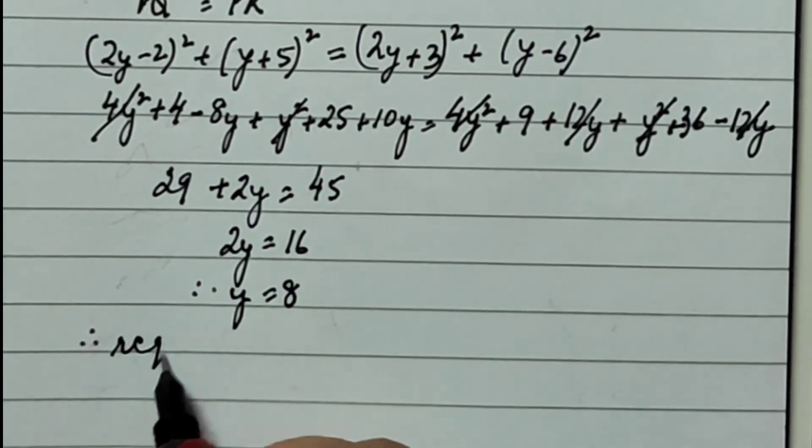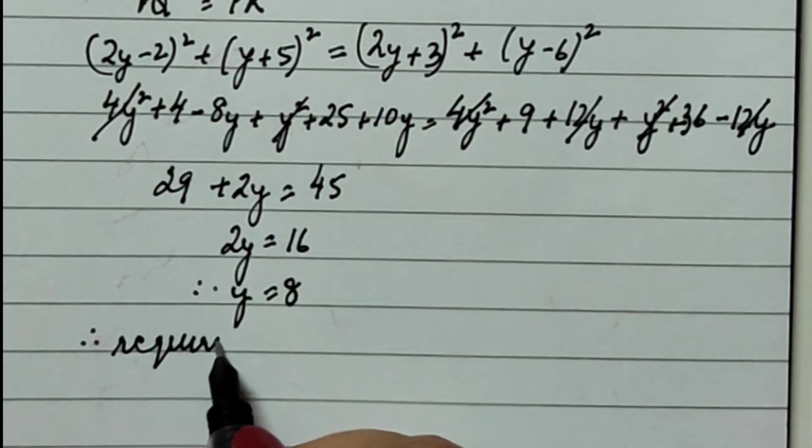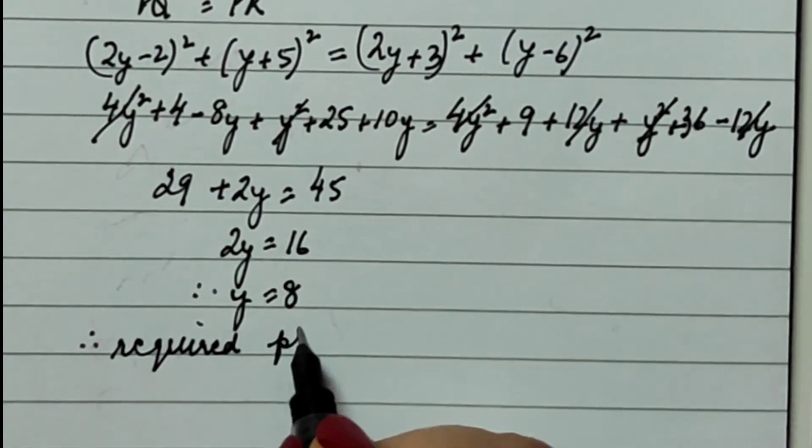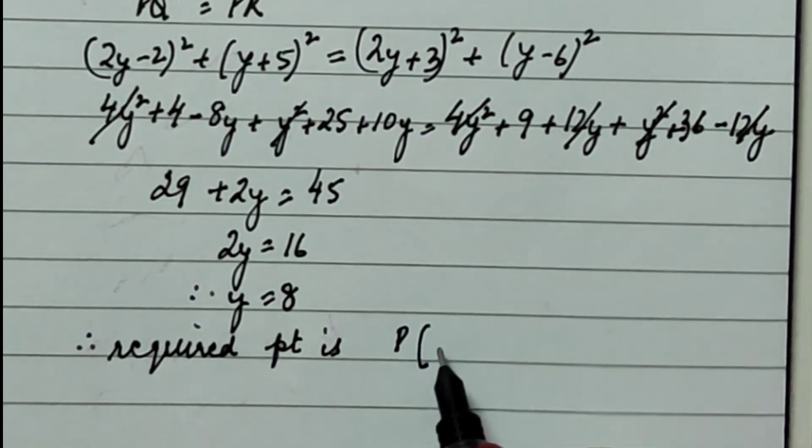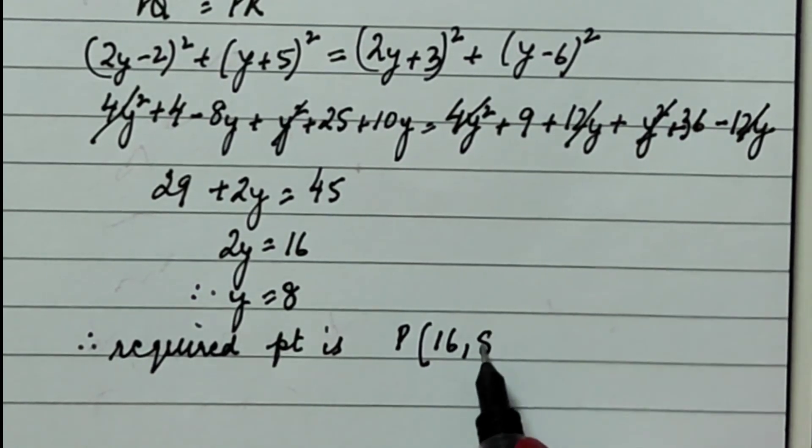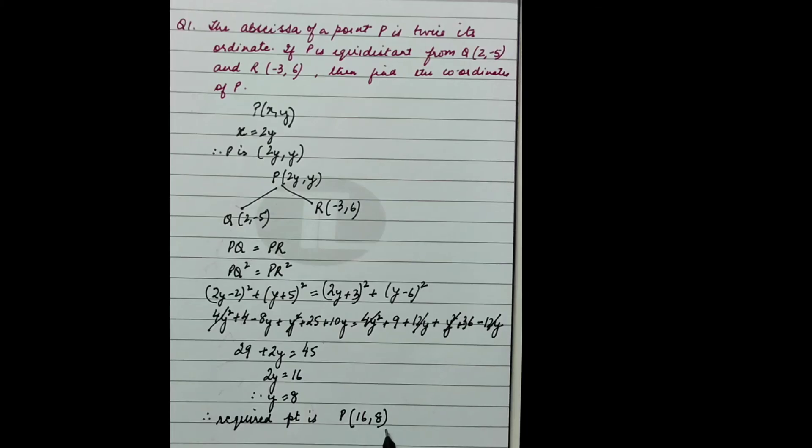Therefore, the required point is how much? Required point is P. It was how much? 2y and y. That means 16, 8. So, the coordinates of P are 16 and 8.